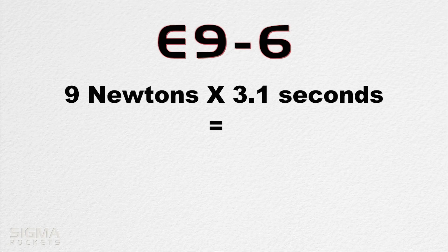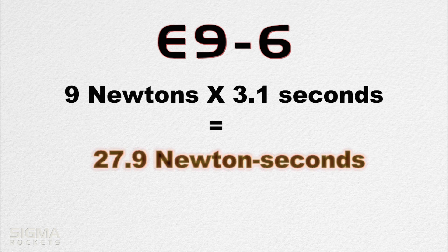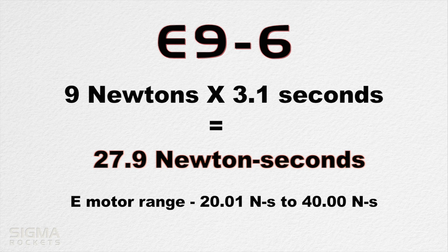Using our E9 motor as an example, if we multiply the average thrust of 9 newtons by the burn time of 3.1 seconds, we get a total impulse of 27.9 newtons. This sits about halfway within the E motor designation.